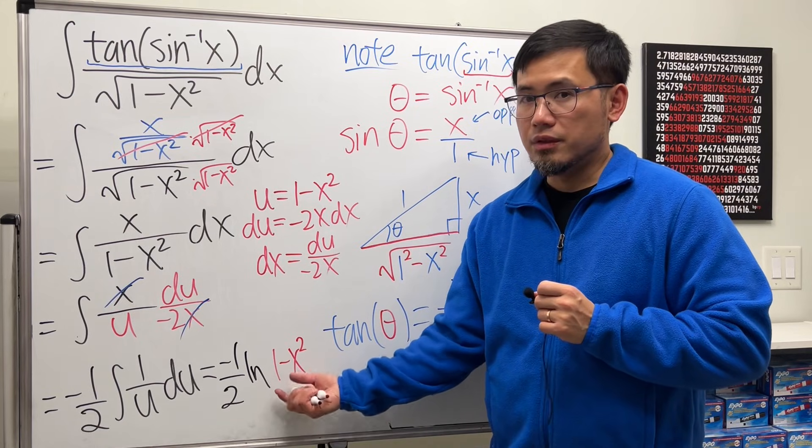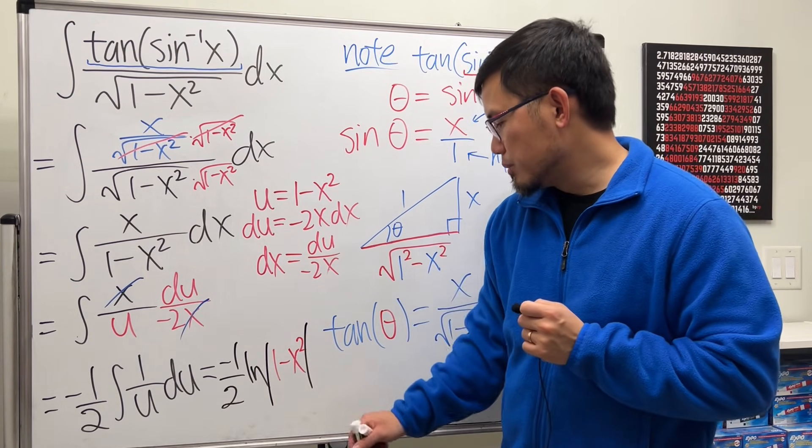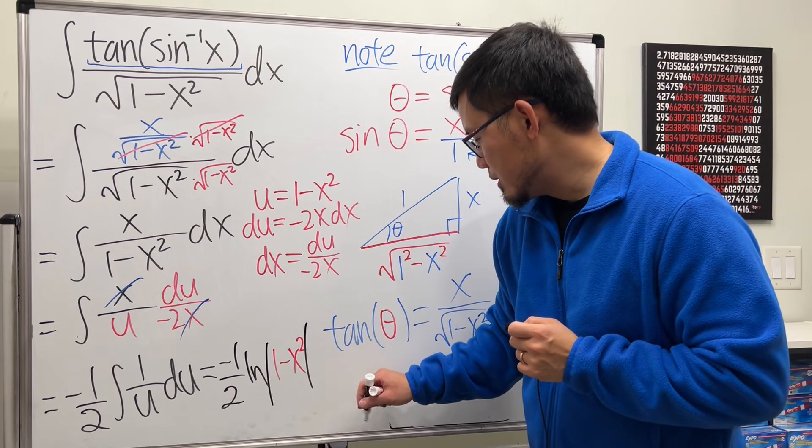This thing can be negative, so be careful. We must have an absolute value around this. So that's pretty much the answer. I'll put down plus C right here.